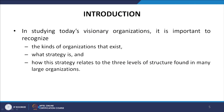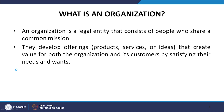In studying today's visionary organizations, it is important to recognize three things: the kinds of organizations that exist today, what strategy is, and how strategy relates to the three levels of structure found in many large organizations. An organization is a legal entity that consists of people who share a common mission. They develop offerings — products, services or ideas — that create value for both the organization and its customers by satisfying their needs and wants.